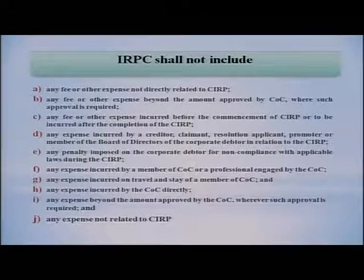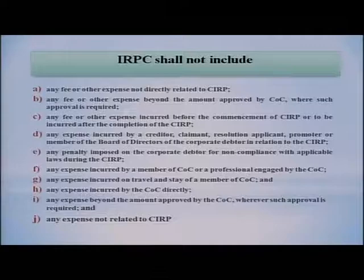Regulation 27 states that insolvency resolution process cost shall NOT include: any fee or other expenses not directly related to CIRP. If you incur some cost elsewhere and try to charge it to the corporate debtor as CIRP cost, that is not permitted. Cost not related to CIRP will not form part of this cost. Irrelevant expenses must be segregated and not charged to the process — IRP must take steps to review that only actual CIRP-related costs are charged.